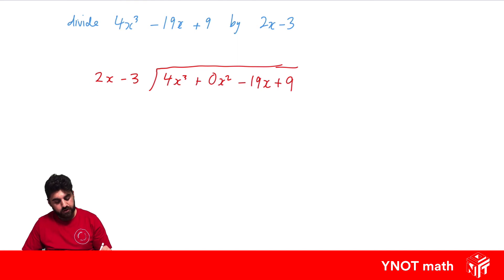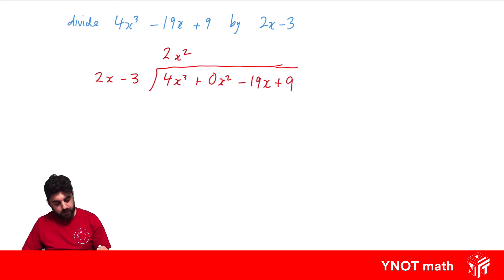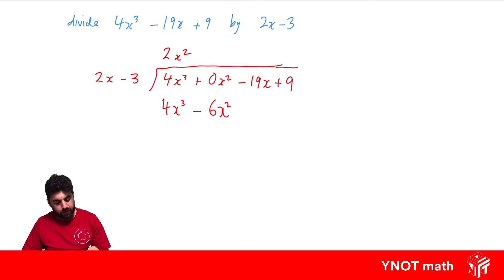How many times does this leading coefficient go into this leading coefficient, or what do you need to multiply this by to get this? That'll be 2x squared. Then we multiply 2x squared by every term in our divisor, giving us 4x cubed minus 6x squared. You can see the importance of including that x squared term.